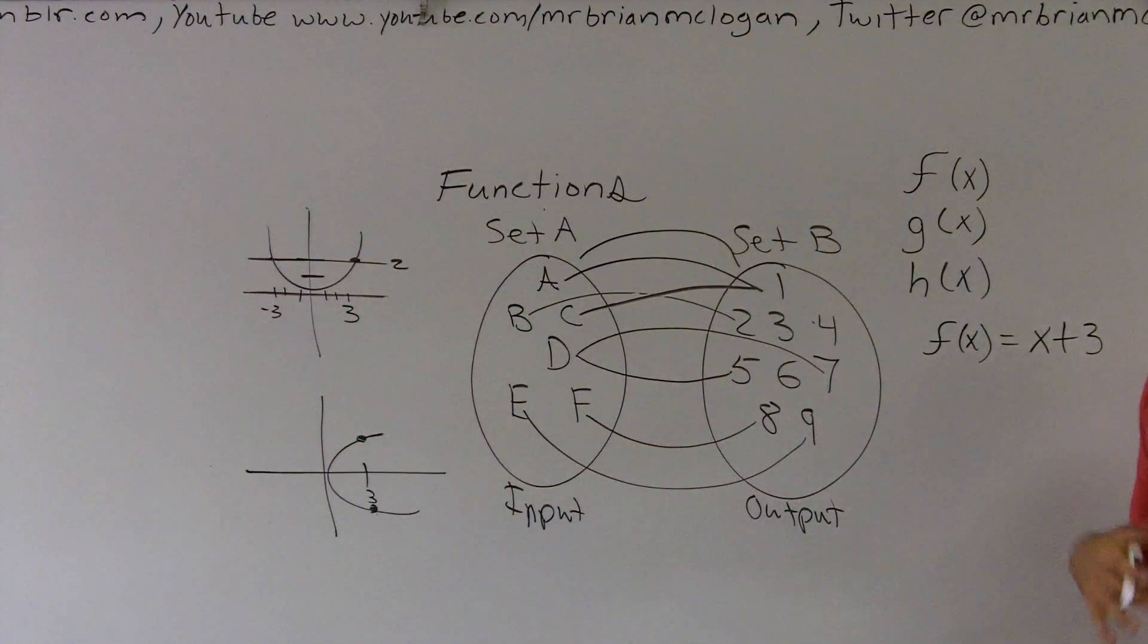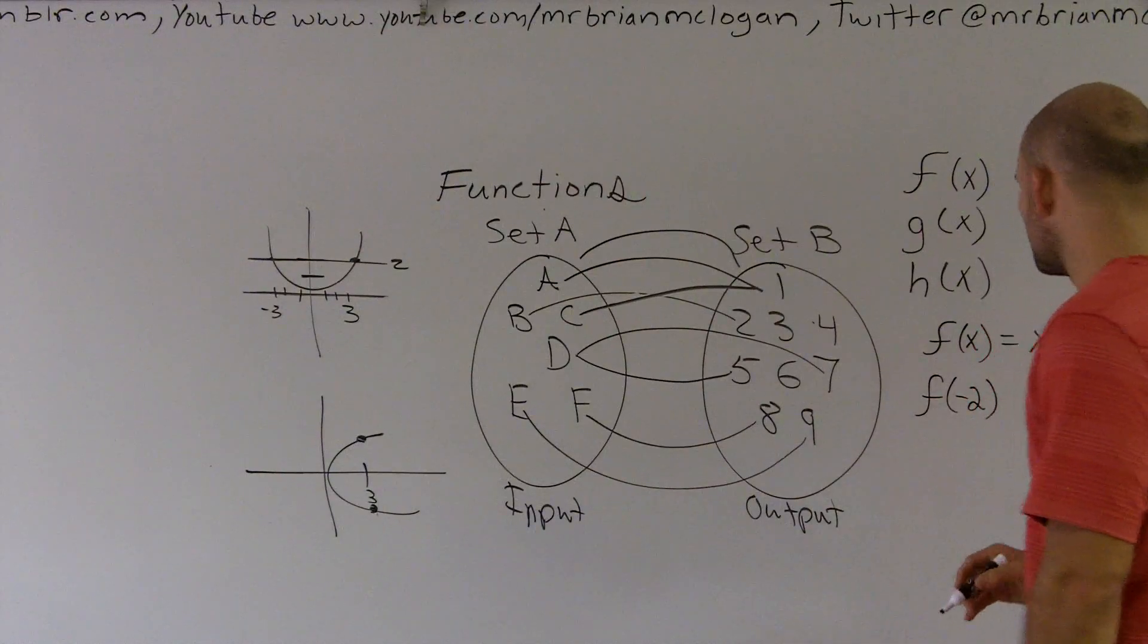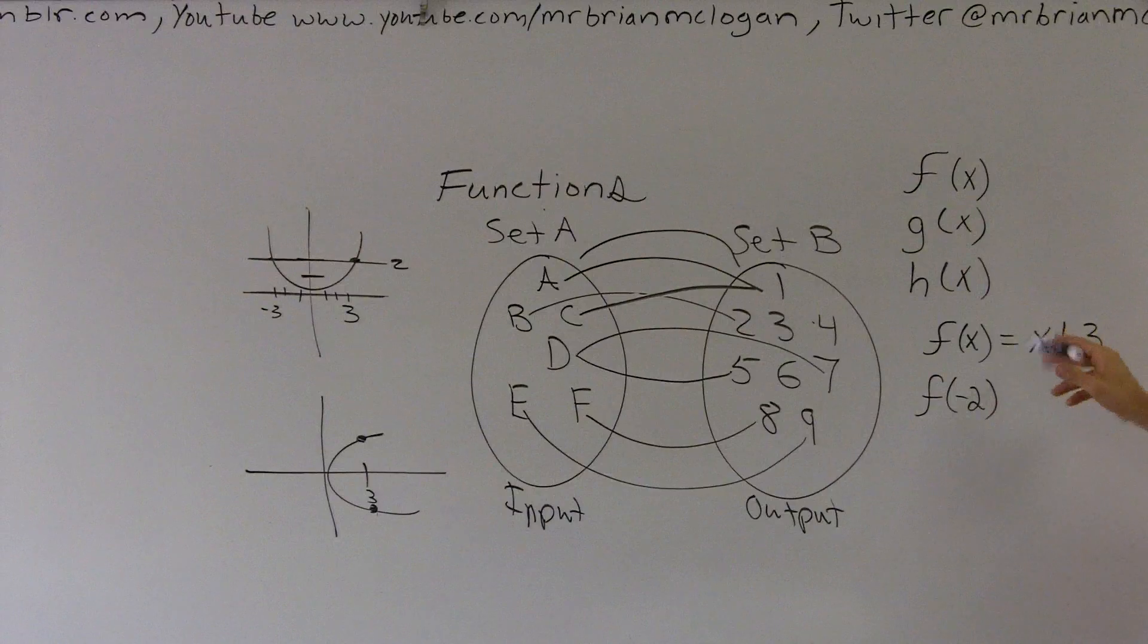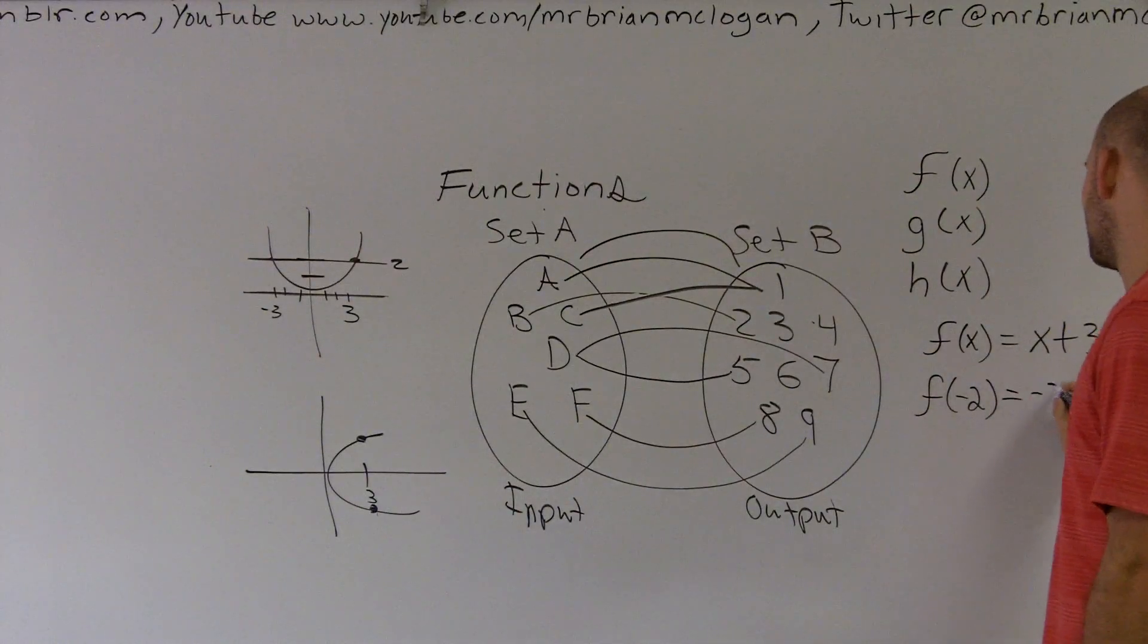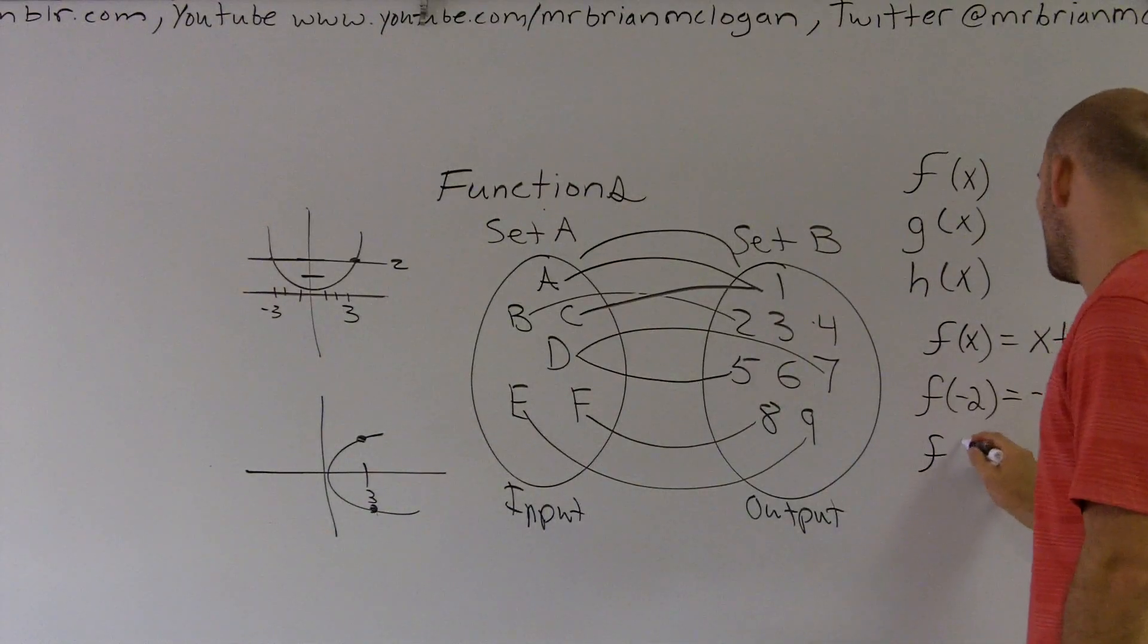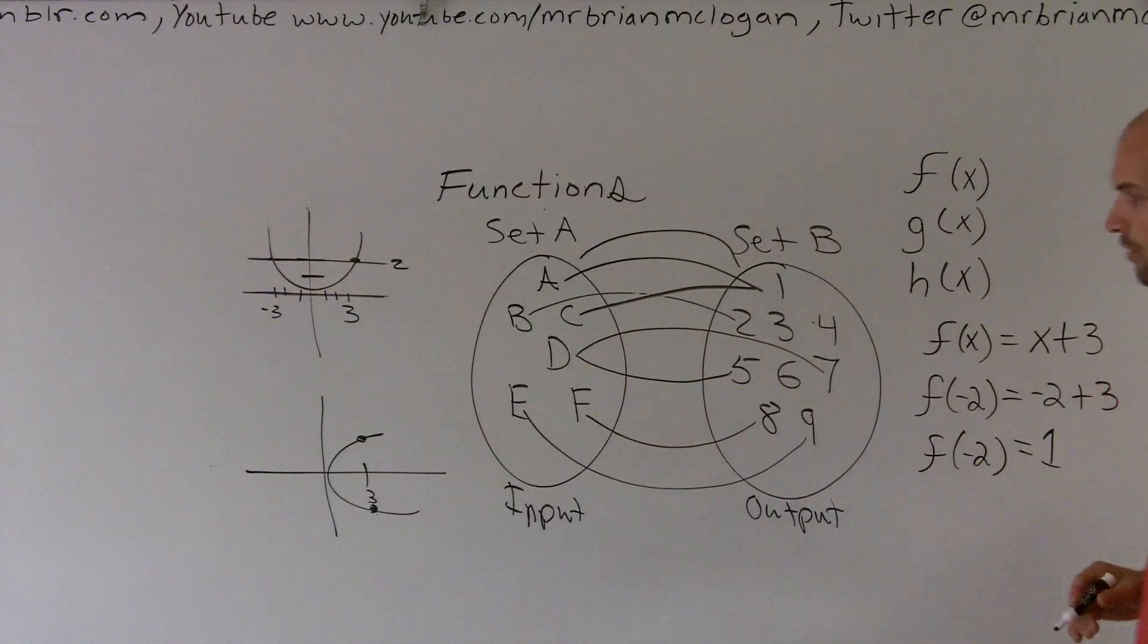You can also find the value of the function at a numeric value. So I could say f(-2). Rather than using x, we're now going to use -2 for x. So that would be -2 + 3. I can evaluate the function, so f(-2) would equal 1.